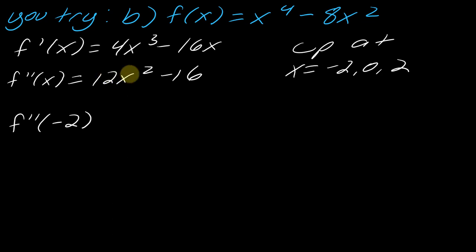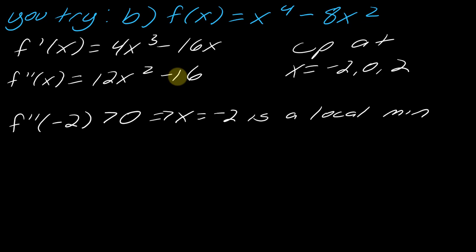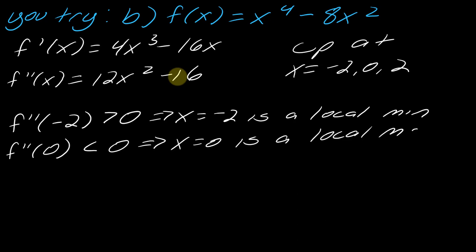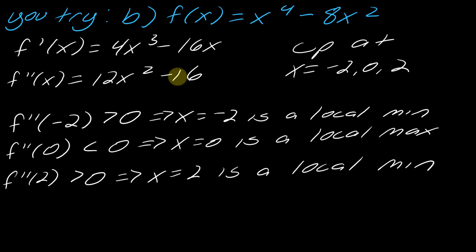Now I plug each critical point into the second derivative to determine its sign. At x equals negative 2, the result is positive — 4 times 12 is much larger than 16 — so there is a local minimum. At x equals 0 the result is negative, giving a local maximum. At x equals 2 the result is again positive, giving a local minimum.